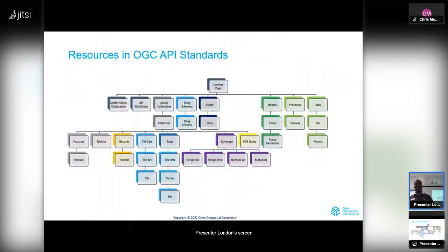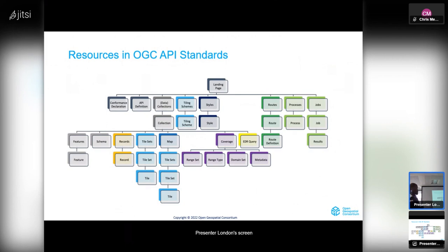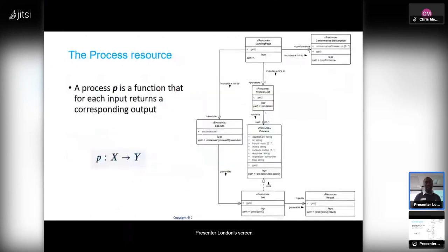These standards have been designed as building blocks so the resources they offer can be integrated into solutions. All of the standards offer a landing page, a conformance declaration listing conformance classes they implement, API definitions as OpenAPI specification documents, and then collections of resources — from which each standard offers its specific resources, such as tile schemes from OGC API Tiles and processes from OGC API Processes.